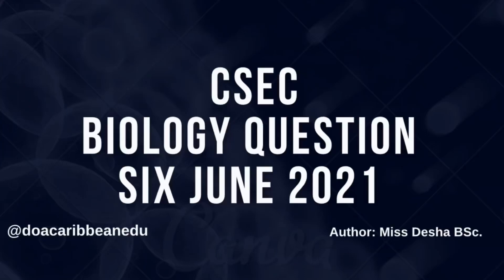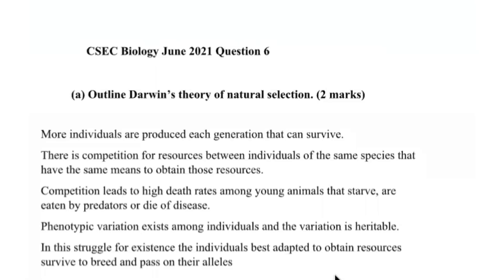Welcome back to another YouTube video. It's your tutor, Disha. Today, I'll be concluding the CSEC Biology June 2021 paper 2. And the first part of the question says, outline Darwin's theory of natural selection.